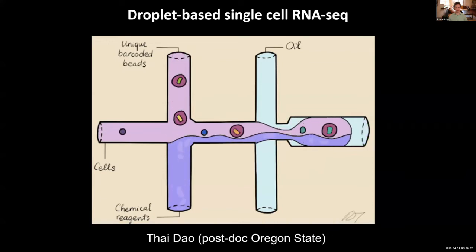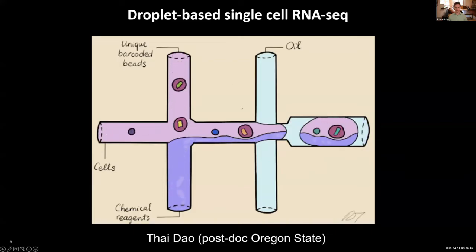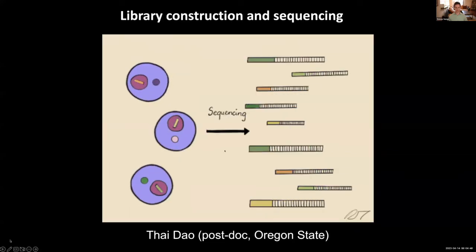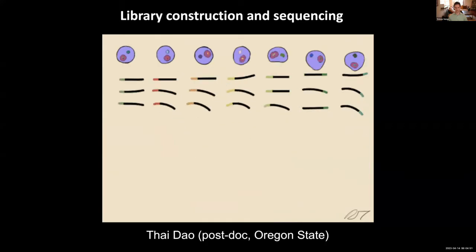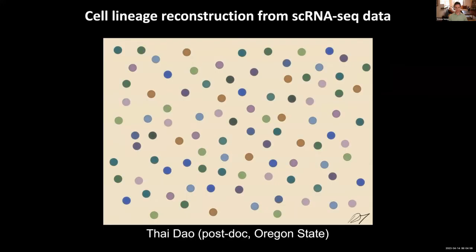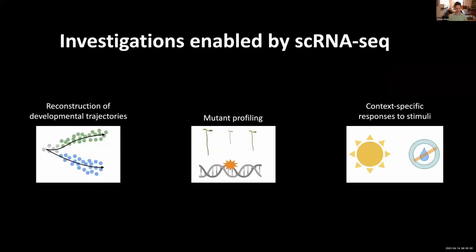Although there are many technologies to do single cell these days, my talk is going to focus primarily on droplet-based technologies, such as those commercially available from 10x Genomics. This illustration shows that in droplet-based single cell sequencing, we're putting a cell and a barcode together along with chemical reagents. This allows us to access the transcriptome of individual cells and produce a cell-by-gene matrix for downstream analysis — for example, to reconstruct cell lineages, dive into developmental trajectories, profile mutants, or look at context-specific responses to stimuli such as environmental stresses or pathogens.